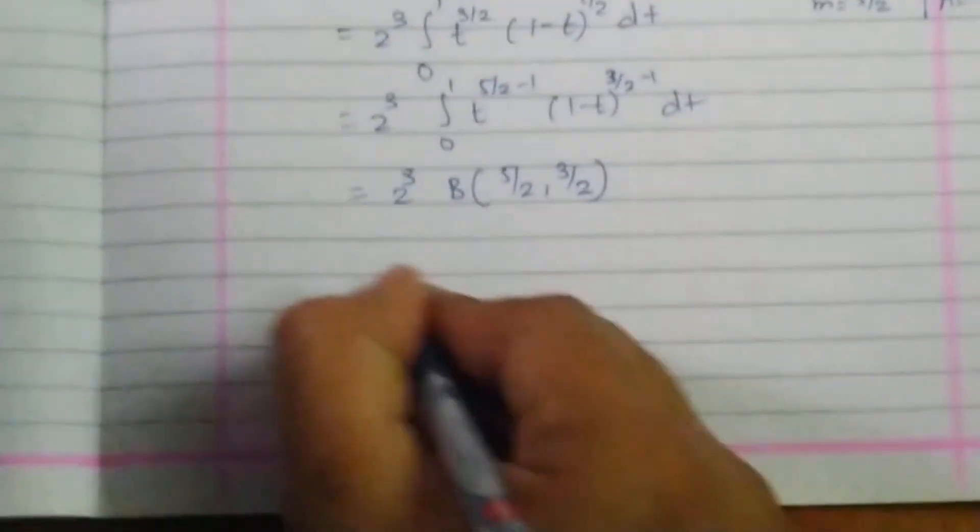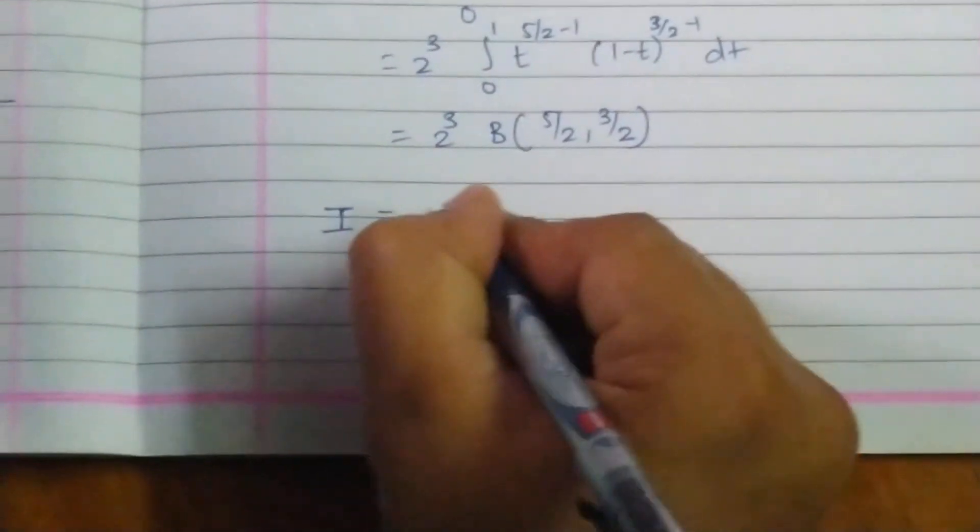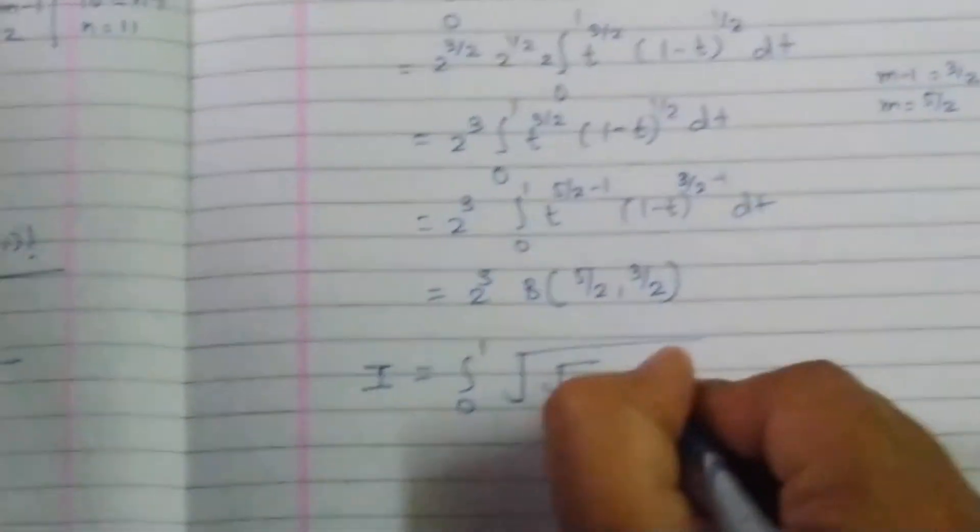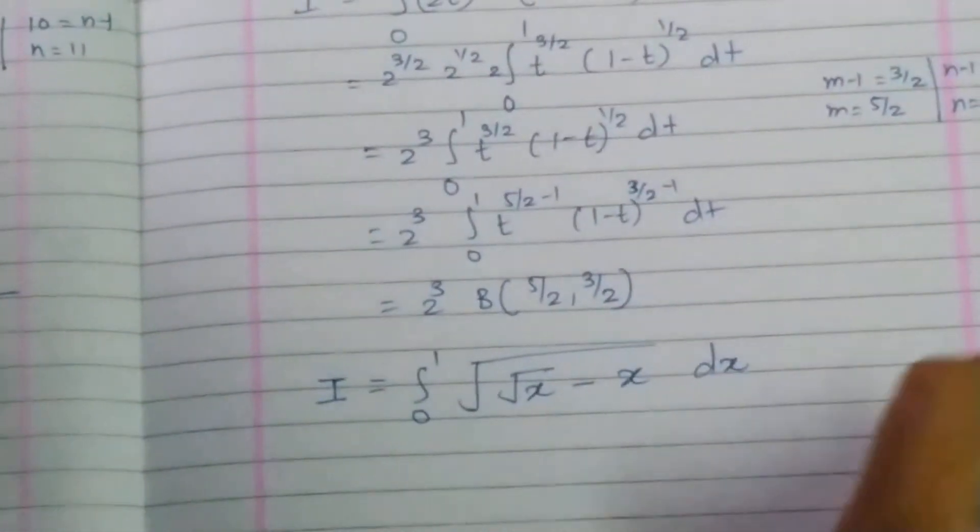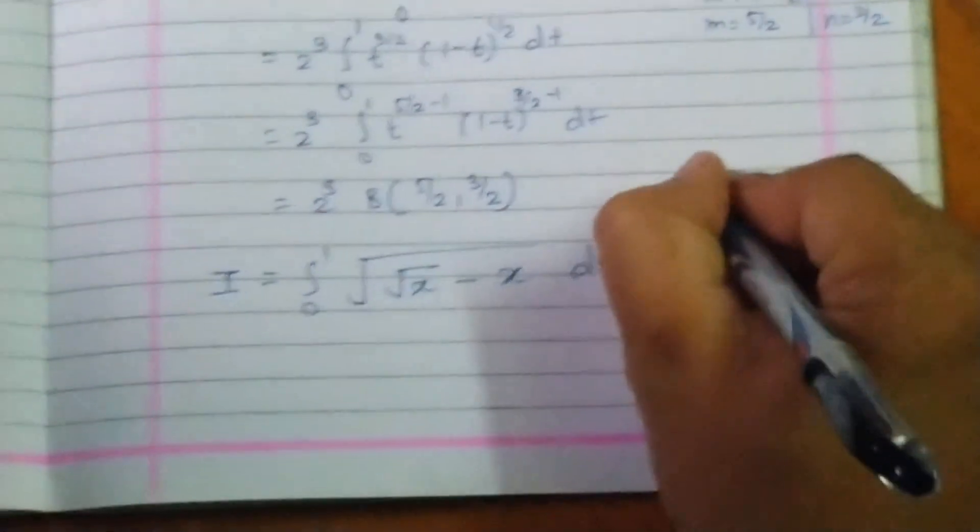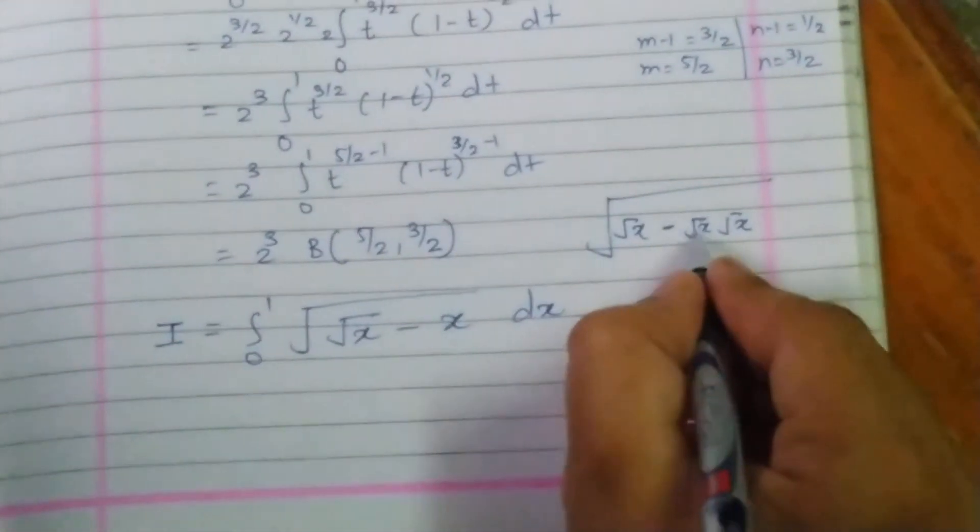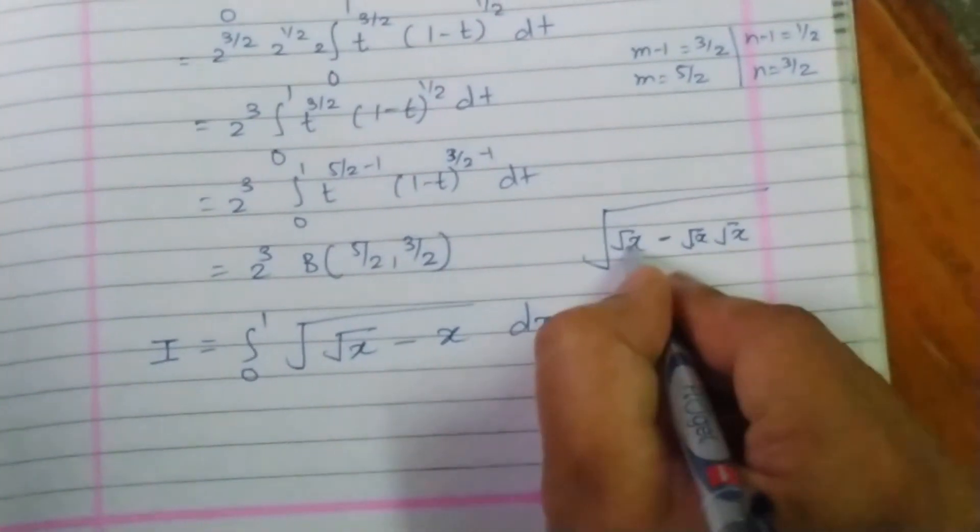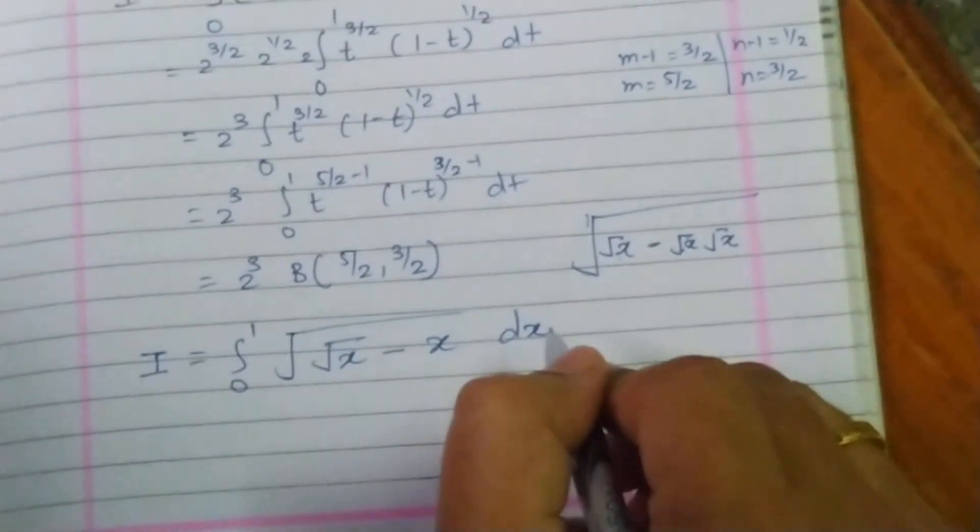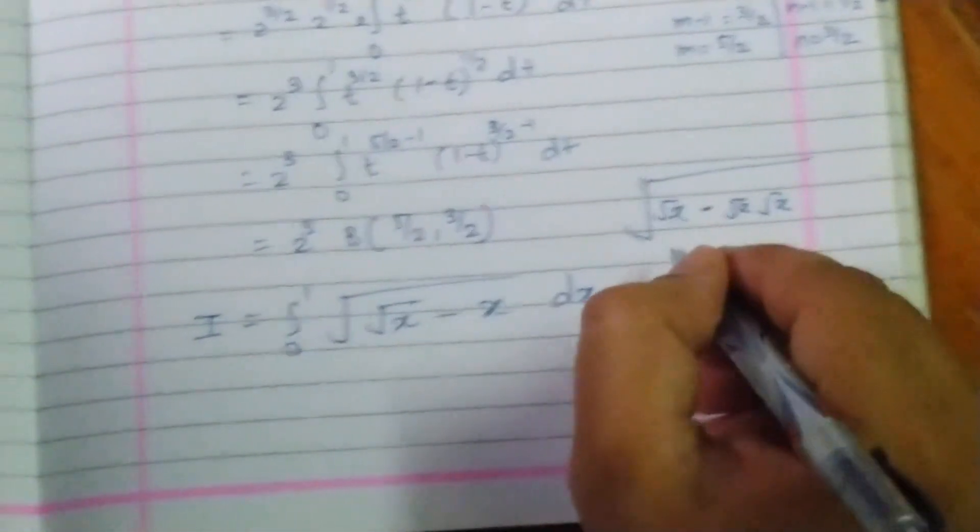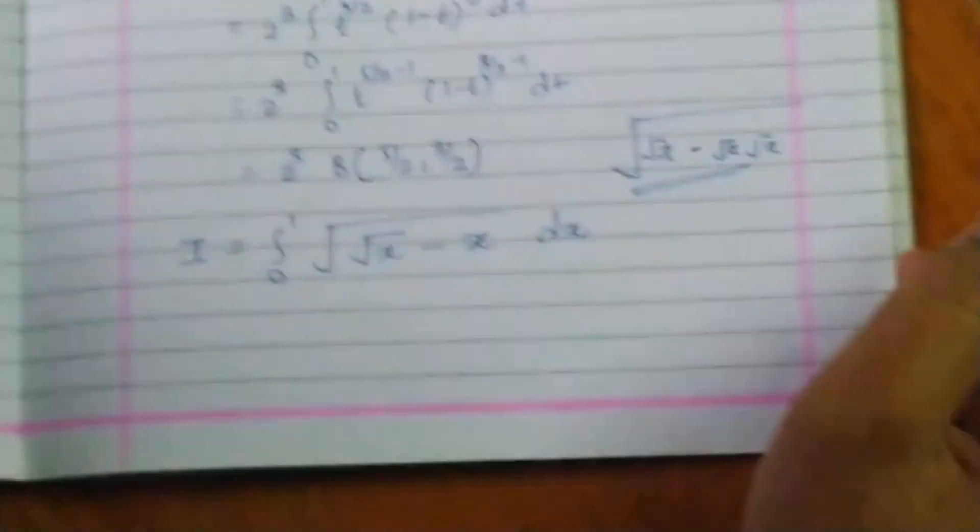Now one more problem I would like to give you for homework. Evaluate I is equal to integration from 0 to 1, square root of square root x minus x, dx. This is of similar type example. What you do is x is replaced by root x into root x. So you will get a situation like this. You can take root x common. While taking root x common, there is a bigger root outside. So root of root x you will get outside with the bracket. This is a hint for this example. Thank you.